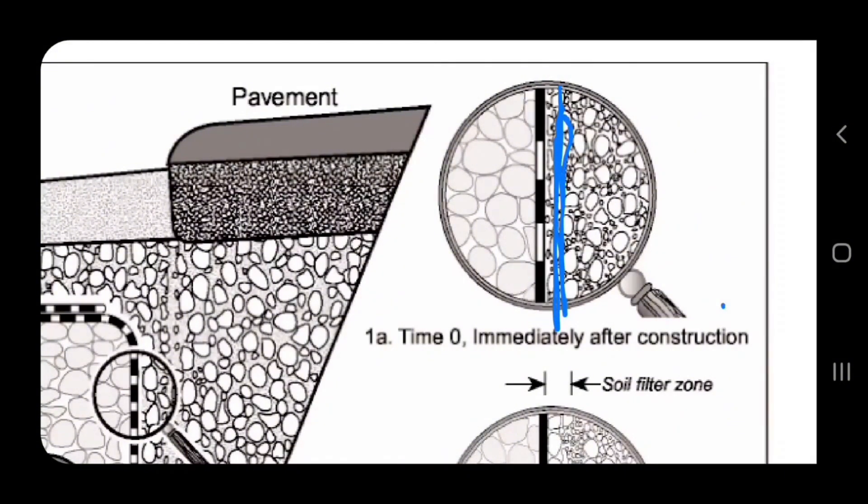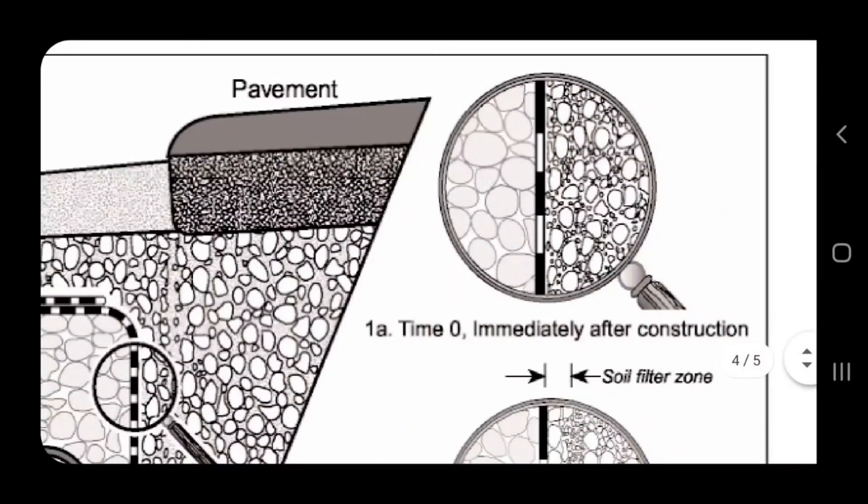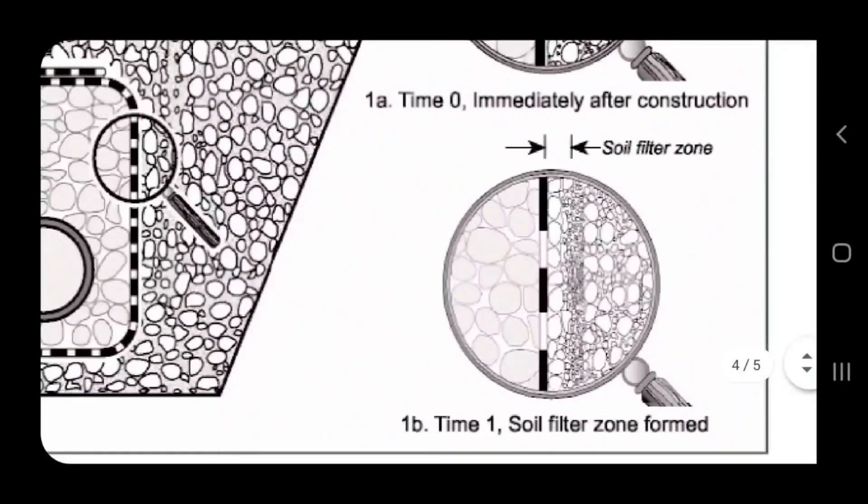Immediately after construction, it's not going to work its best. You've got to get all that sediment to wash through it. As time goes on and it's washing sediment through that non-woven geotextile fabric that's double punched, you are going to create the soil filter zone.